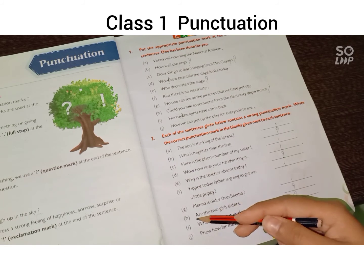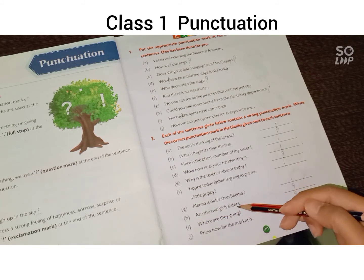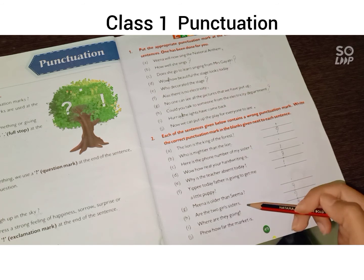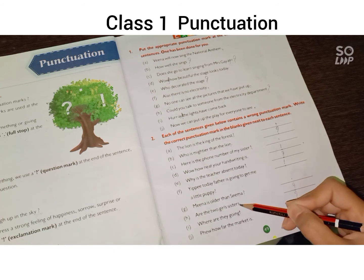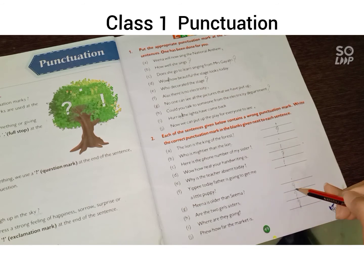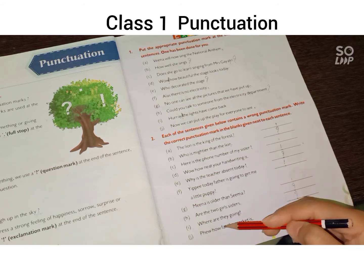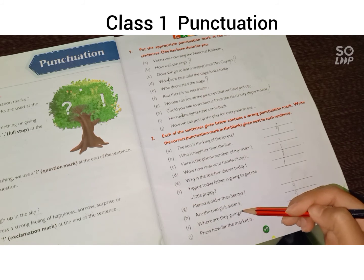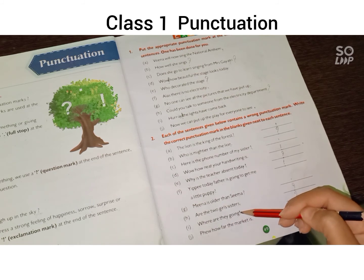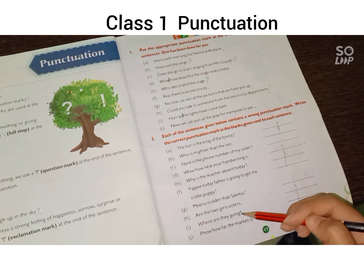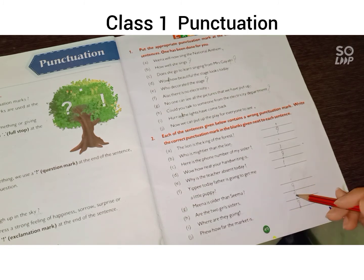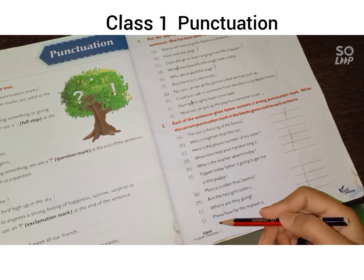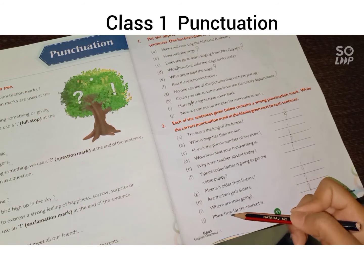Part (h): 'Are the girls sisters?' क्या यह दोनों girls sisters हैं — यह एक question है, तो यहां पर question mark आना चाहिए था, तो यह full stop हट जाएगा और question mark आ जाएगा। Part (i): 'Where are they going?' यह लोग कहां जा रहे हैं — यह एक question है, तो यहां पर exclamation mark नहीं आना चाहिए — exclamation mark हटेगा और question mark आ जाएगा।